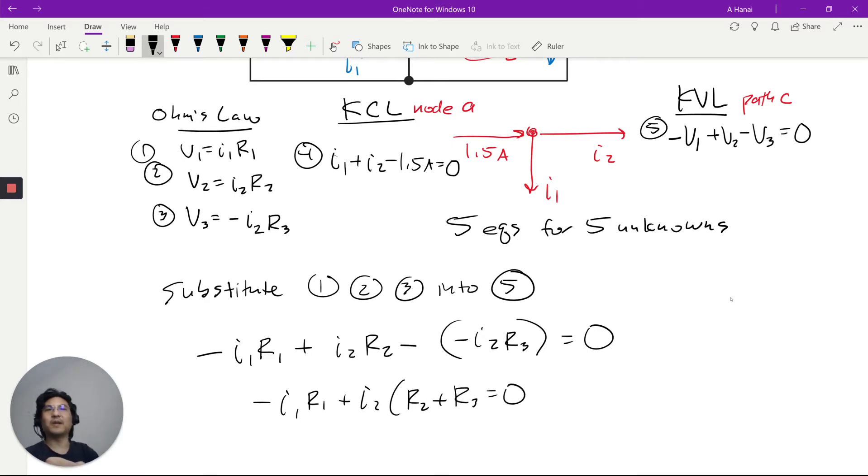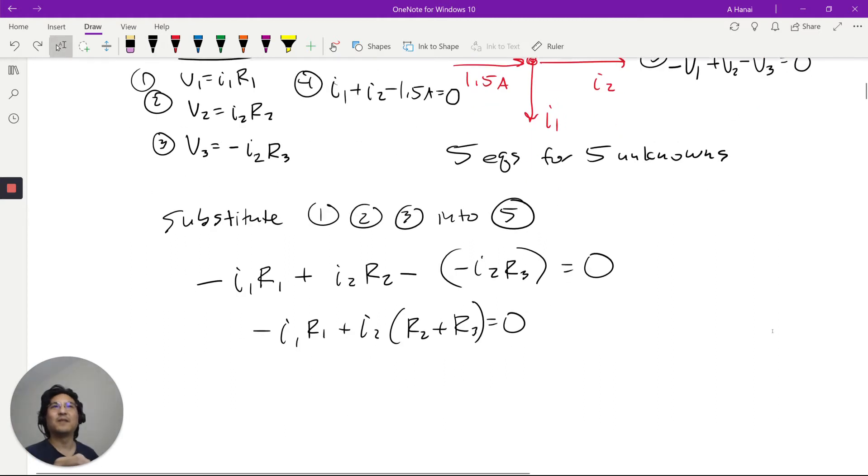So we got this equation, and now let's combine that with equation 4. From equation 4, let's substitute. I1 equals, that's this one right here, 1.5 minus I2. I just rewrote it, I just moved these on the other side.